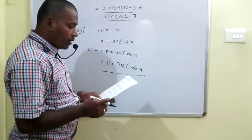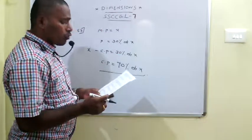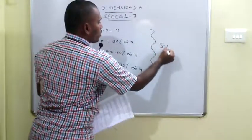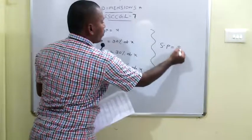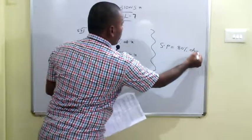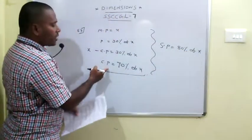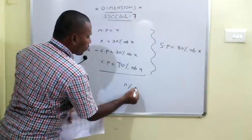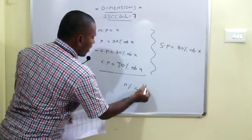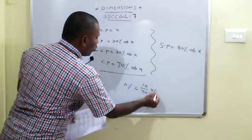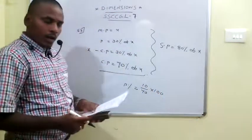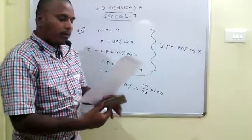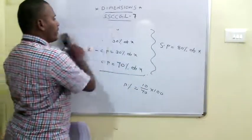Actually he gave a discount of 20%, so the actual selling price is 80% of x. Cost price is 70% of x and selling price is 80% of x. Profit percentage = (80% - 70%) / 70% × 100 = 10/70 × 100 = 14 and 2/7 percent.